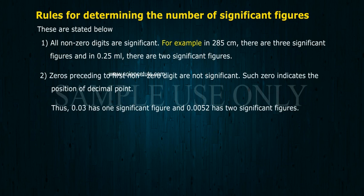Rule 2: Zeros preceding the first non-zero digit are not significant. Such zeros indicate the position of the decimal point. Thus, 0.03 has one significant figure and 0.0052 has two significant figures.